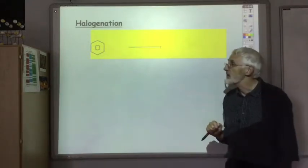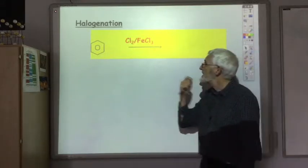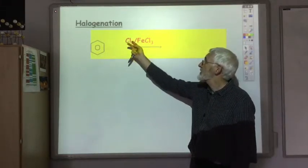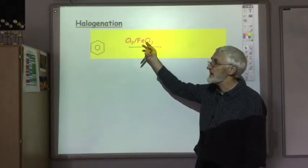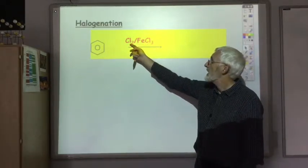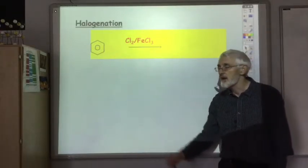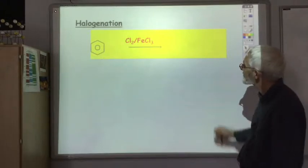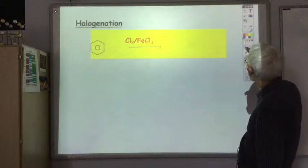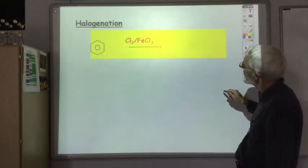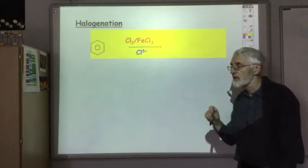How about adding a halogen? Well, in this case, you're going to use Cl2 and iron chloride catalyst. So the iron chloride is a catalyst here. We're using Cl2; if it was another halogen, it would be Br2, I2, etc.